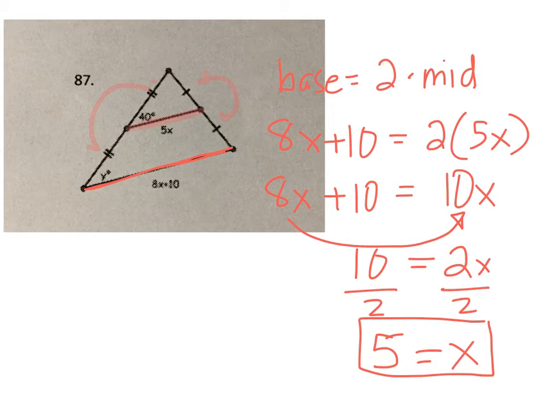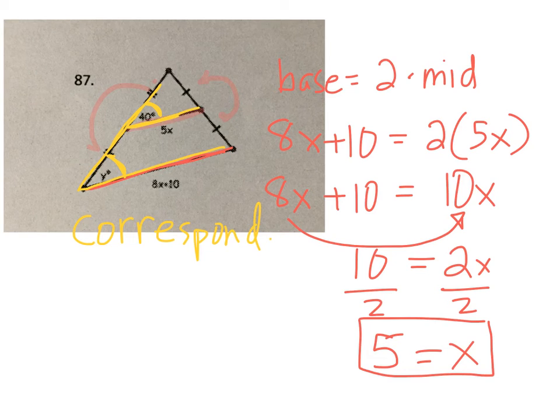Now, what about y? So if I remember, these lines are parallel. So there's your transversal. These angles are called corresponding angles. So if one's on, if they're not in between, then they're corresponding. And corresponding angles are congruent. So we write y equals 40, and there's nothing else for us to do. Thank you.